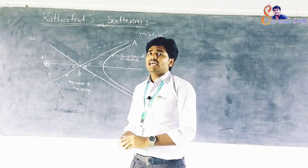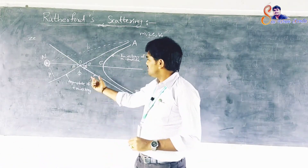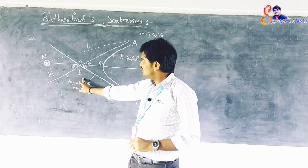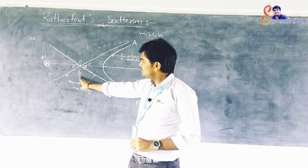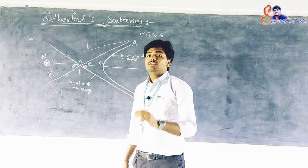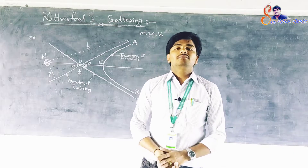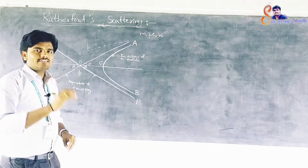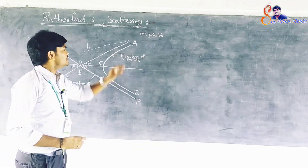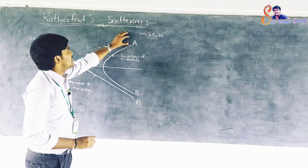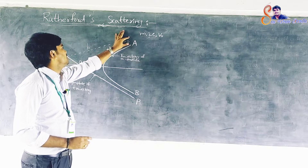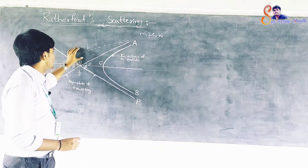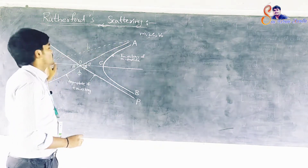The angle of deviation or the scattering angle is denoted by θ. To derive an expression for θ, we consider the case where an alpha particle is directed straight towards the nucleus.